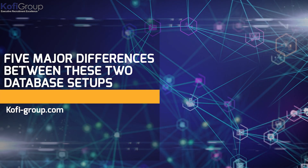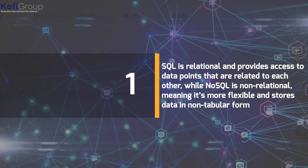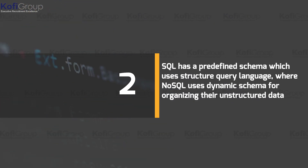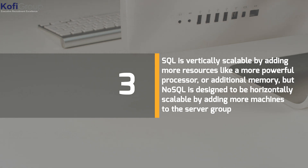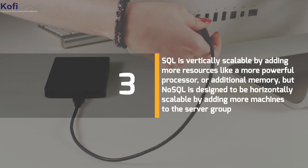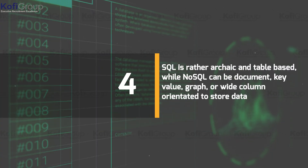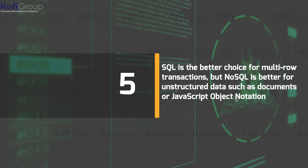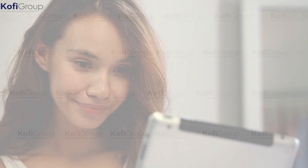There was a shift: the primary cost of software development wasn't storage anymore — it was the developers themselves. This filtered down into how databases work, shifting focus from reducing data duplication to optimizing developer productivity. SQL versus NoSQL: five major differences. Number one: SQL is relational, providing access to related data points, while NoSQL is non-relational and stores data in non-tabular form. Number two: SQL has a predefined schema using structured query language, while NoSQL uses dynamic schema for unstructured data. Number three: SQL is vertically scalable by adding more powerful processors or memory, but NoSQL is horizontally scalable by adding more machines. Number four: SQL is table-based while NoSQL can be document, key-value, graph, or wide-column oriented. Number five: SQL is better for multi-row transactions, but NoSQL is better for unstructured data such as documents or JSON.